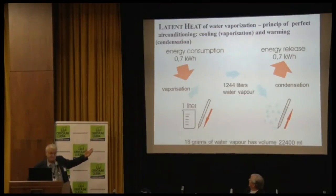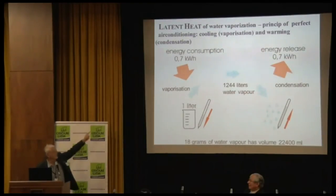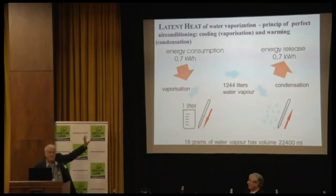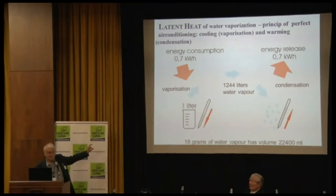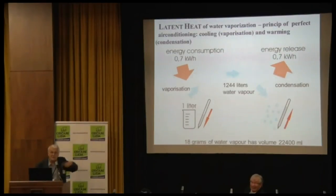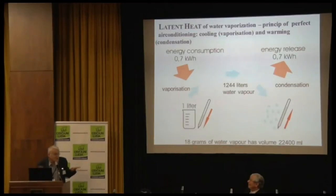Consider one liter of water. To evaporate one liter, we must add 0.7 kilowatt hours — 2.5 megajoules divided by 3,600. Then the water evaporates, energy is stored in the water vapor, and when it condenses somewhere that energy is released. What we don't realize is there is a big change in volume: one liter of water, when it evaporates, becomes 1,200 liters of vapor — more than 1,000 times more. A steam engine works everywhere there is vegetation, but at a temperature of 20 degrees.